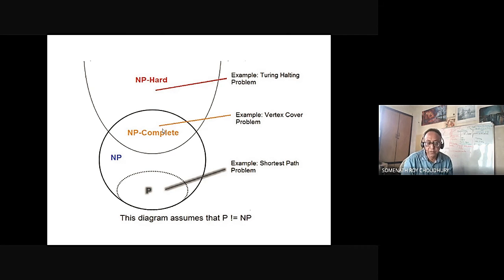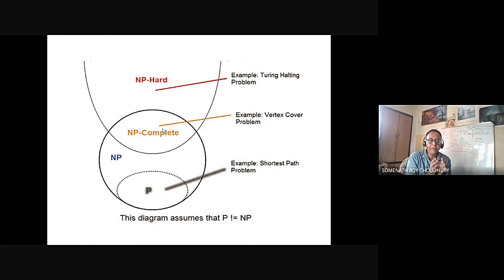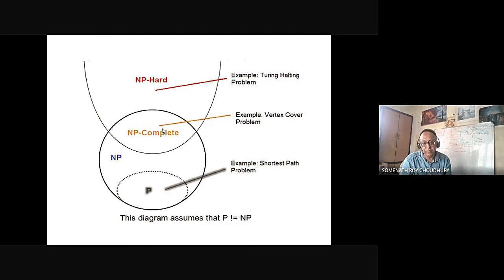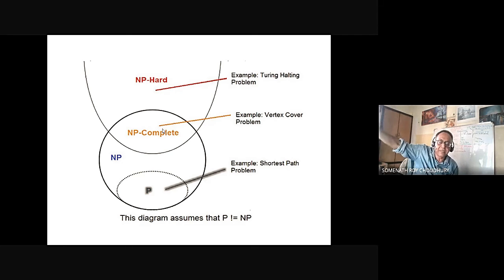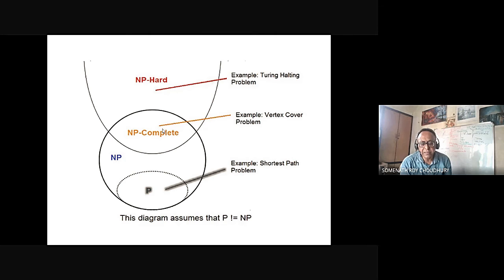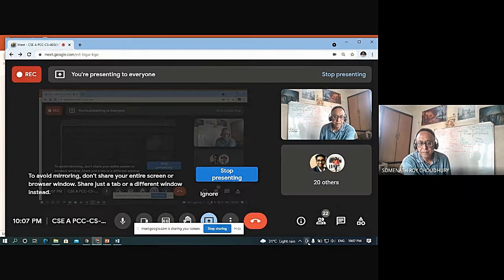There is a subtle difference between NP-complete and NP-hard. NP-complete means whenever you give a solution, it can be quickly verified. NP-hard means if you give a solution, it is difficult to verify — like exponential. The highest end of the problem is the Turing halting problem. It has been proven that the multi-tape Turing machine can all be simulated by a single tape Turing machine.